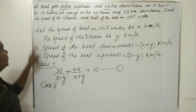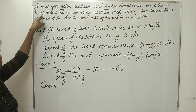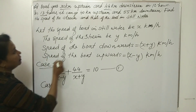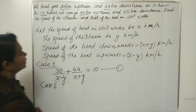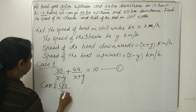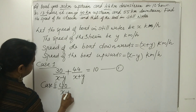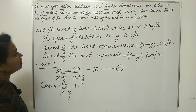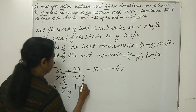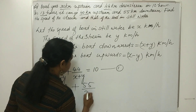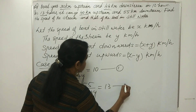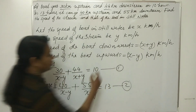In 13 hours, time taken is 13. For 40 km upstream and 55 km downstream, you can write: 40 divided by (x minus y) plus 55 divided by (x plus y) equals 13 hours. So this is our second equation.